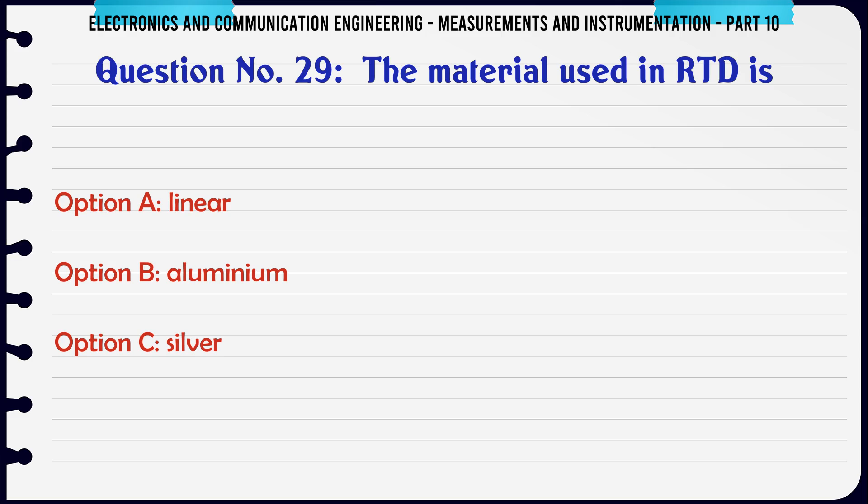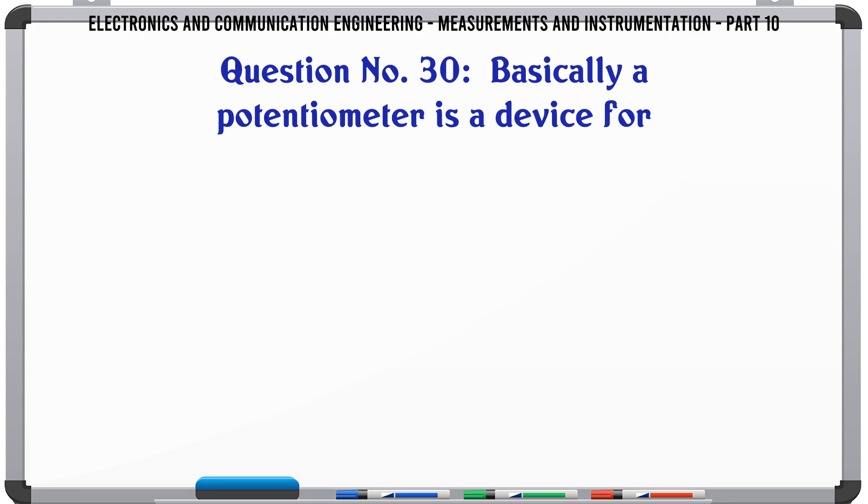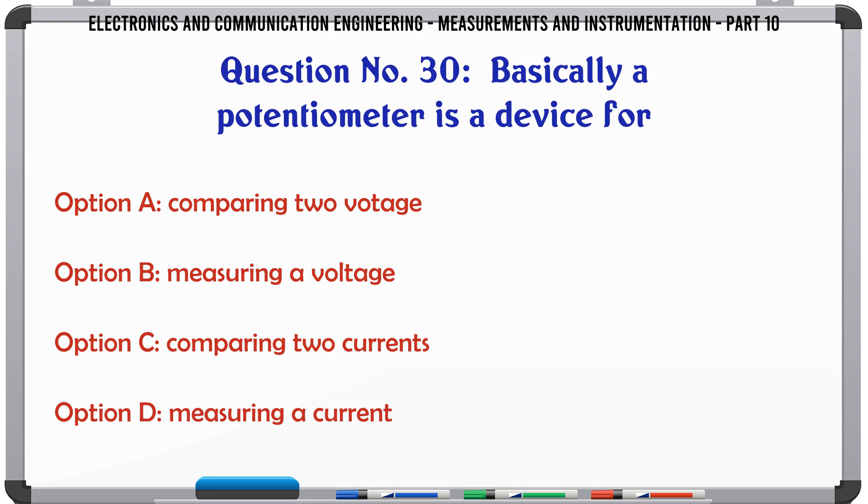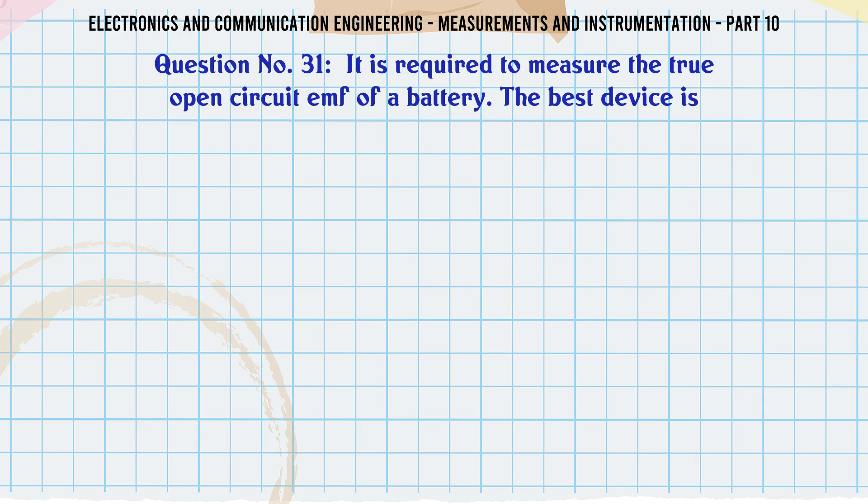The material used in RTD is: A) linear, B) aluminum, C) silver, D) platinum. The correct answer is platinum. Basically, a potentiometer is a device for: A) comparing two voltages, B) measuring a voltage, C) comparing two currents, D) measuring a current. The correct answer is comparing two voltages.